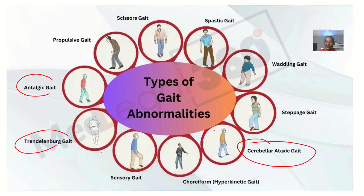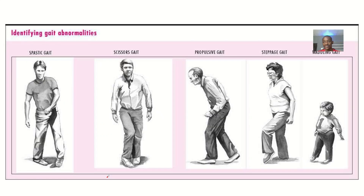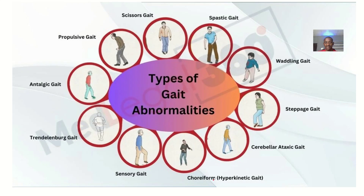Looking at spastic gait — you can see how the person's legs are positioned. It's a gait with stiff, awkward movements where the legs may cross over each other, known as scissoring. It's often due to conditions like cerebral palsy or multiple sclerosis.